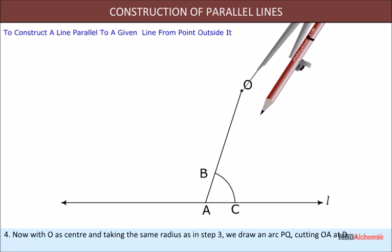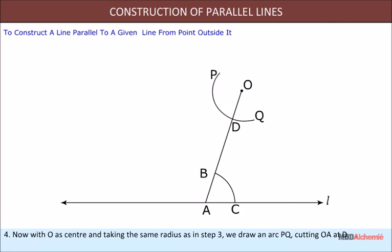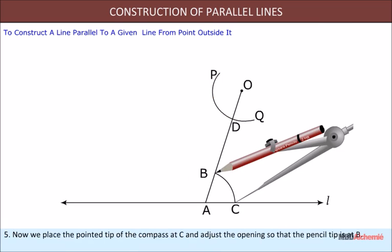Step 4: Now with O as center and taking the same radius as in step 3, we draw an arc PQ cutting OA at D. Step 5: Now we place the pointed tip of the compass at C and adjust the opening so that the pencil tip is at B.